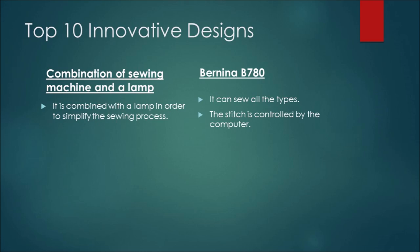Number five: combination of sewing machine and lamp. This machine is combined with a lamp so that the operation of sewing is very easy to the person doing the sewing process.